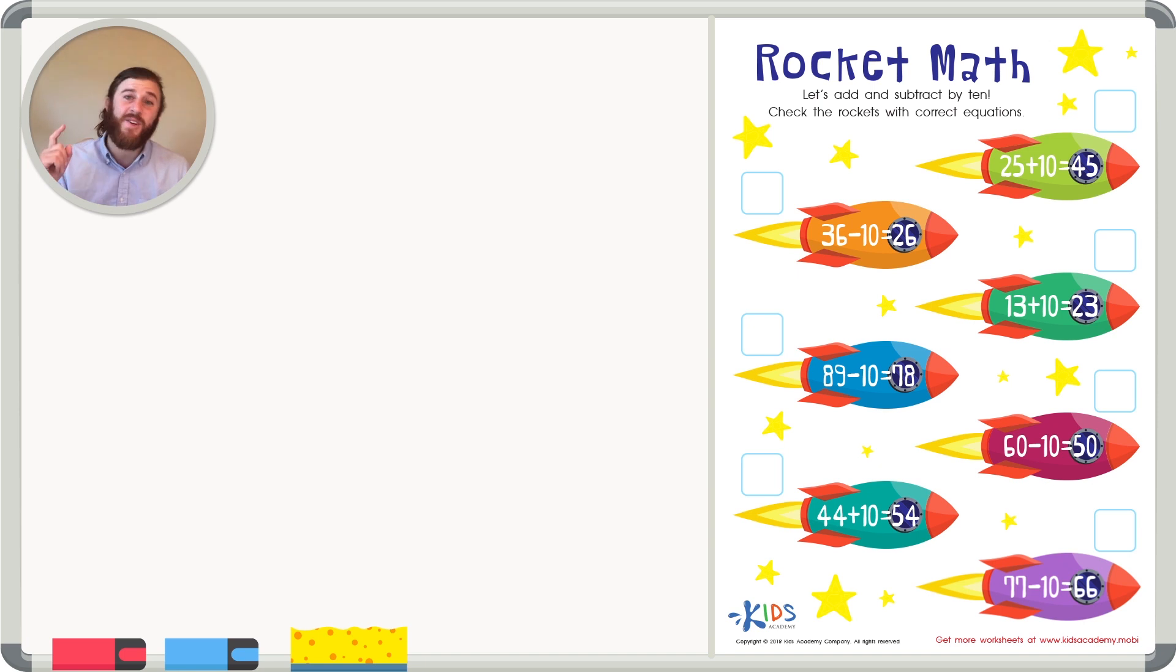You could I bet even do this in your head. So let's try taking 10 away from 65. Remember when you take away 0 from anything, so 5 minus 0, you're just going to have 5. Remember that.